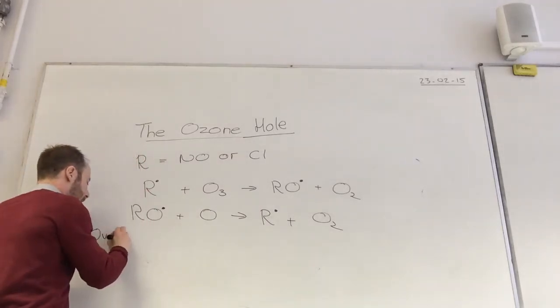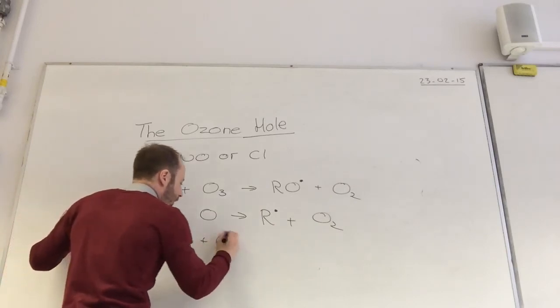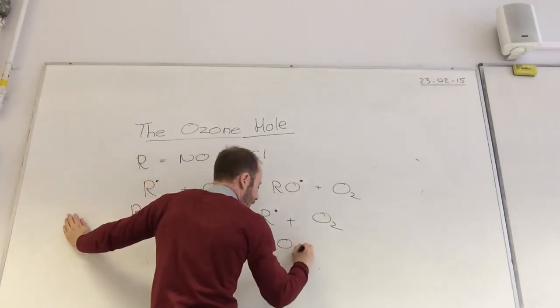And again, overall. They like you to write the overall equation. Overall O3 plus O gives you 2 O2.